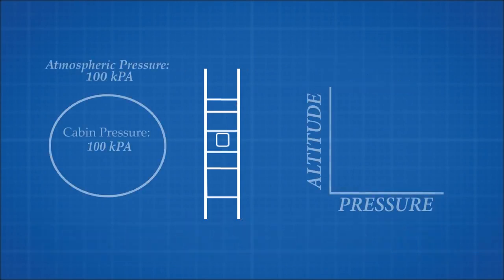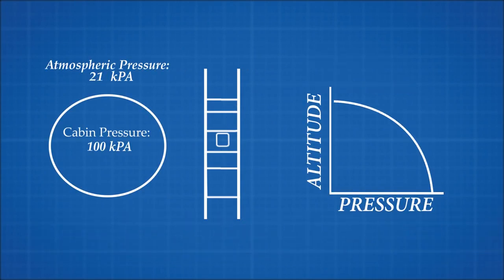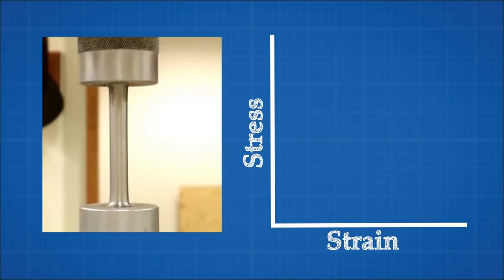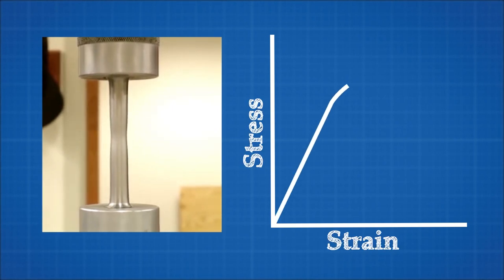As a plane increases in altitude, the external atmospheric pressure lowers more than the internal cabin pressure. This creates a pressure difference between the inside and outside of the plane, causing the plane to expand ever so slightly. When a material changes shape like this, stress is created in the material. As the material is stretched more and more, the stress begins to rise, and eventually it can rise so high that the material breaks.